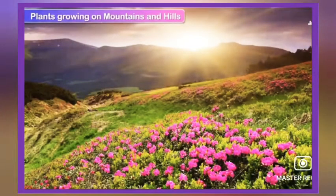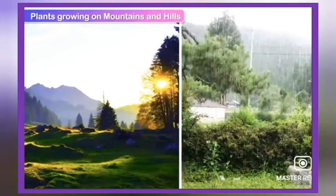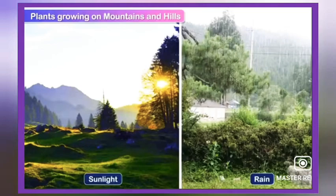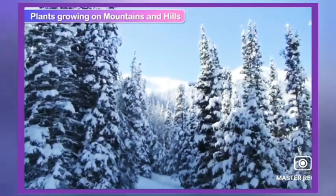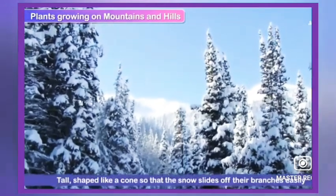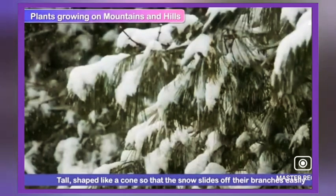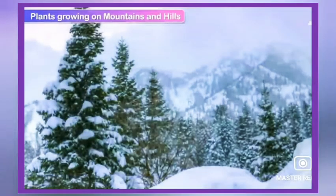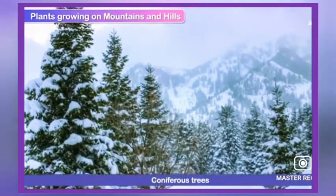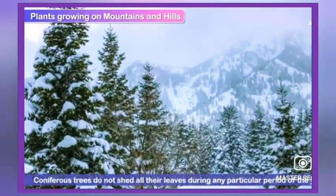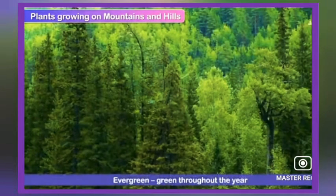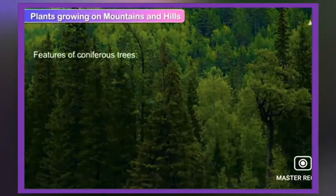Plants growing on mountains and hills get ample sunlight and rain. Plants that grow on snow-capped mountains are tall and shaped like a cone so that snow slides off their branches easily. These trees are called coniferous trees. Coniferous trees do not shed all their leaves during any particular period of the year. They are also generally evergreen, that is green all through the year.